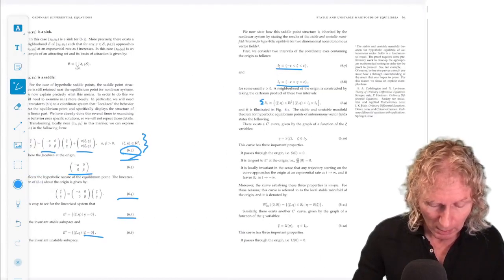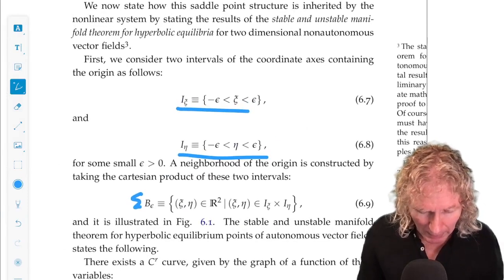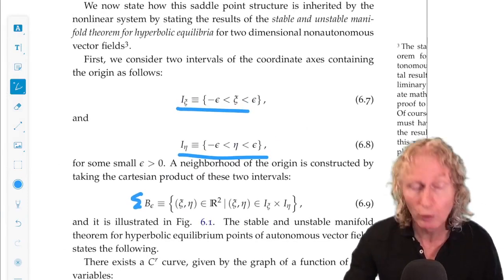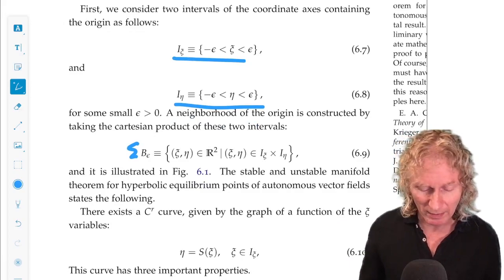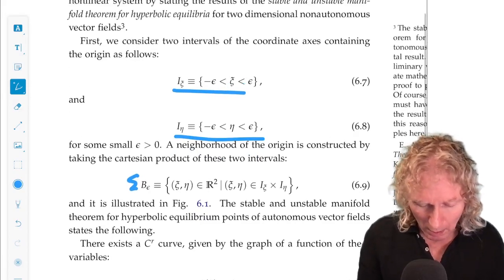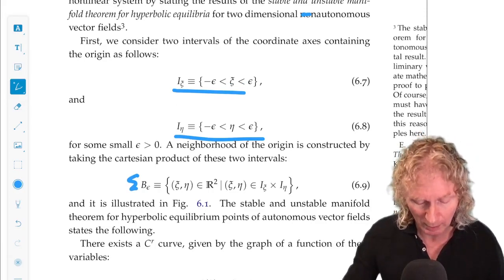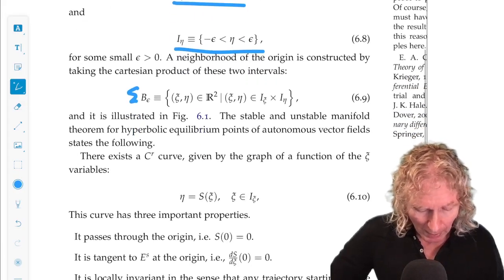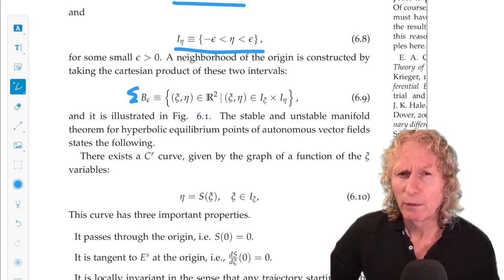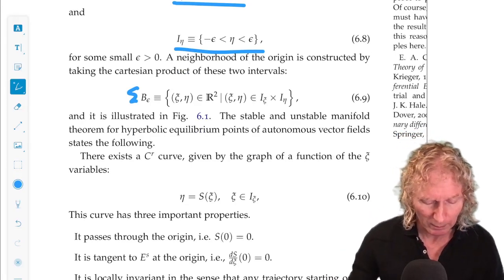All right, now, the stable and the unstable manifold for autonomous vector fields is the following, which I'm going to state. So, there exists a C^r curve, we're going to talk about the stable manifold.